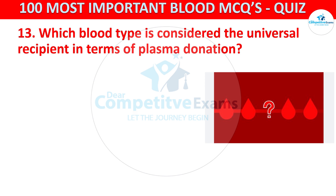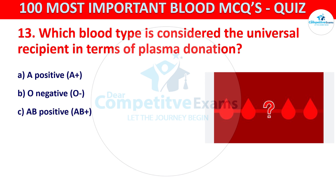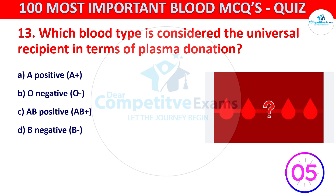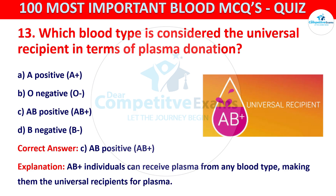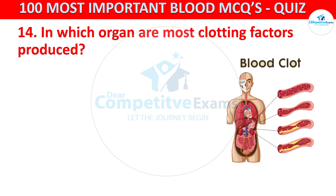Your options are A positive, O negative, AB positive, or B negative. The correct answer is C, that is AB positive. AB positive individuals can receive plasma from any blood type, making them the universal recipient for plasma. Question number fourteen: in which organ are most clotting factors produced?